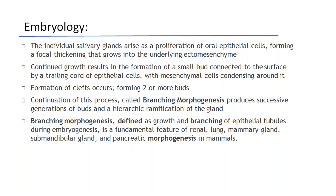Continuation of this process, called branching morphogenesis, produces successive generations of buds and a hierarchical ramification of the gland. Branching morphogenesis, defined as growth and branching of epithelial tubules during embryogenesis, is a fundamental feature of renal, lung, mammary gland, submandibular gland, and pancreatic morphogenesis in mammals.